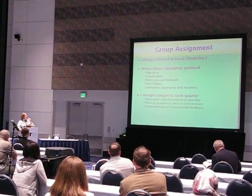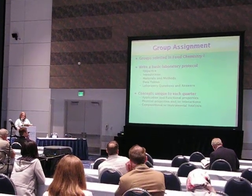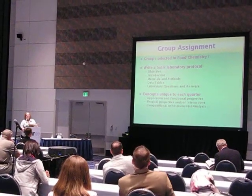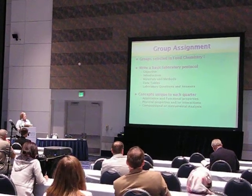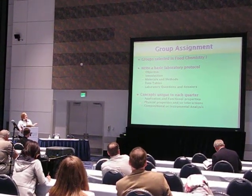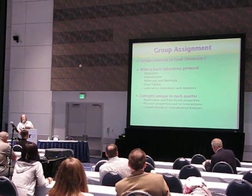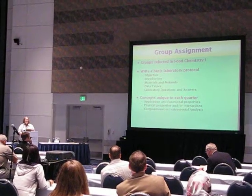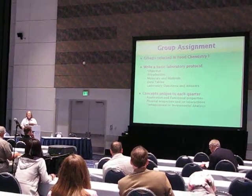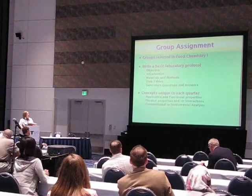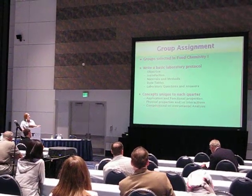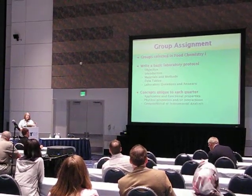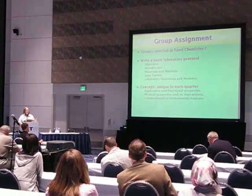The concepts are unique to each quarter. In Food Chemistry 1, the idea is that they learn what I call the basics — applications, functional properties, etc. In Food Chemistry 2, we focus more on physical properties and interactions, and bring in ideas of how reactions in food can affect color, texture, and quality indicators. Then Food Analysis looks at compositional and instrumental analysis and how what would seem a simple analysis of functional properties can actually reveal much more.